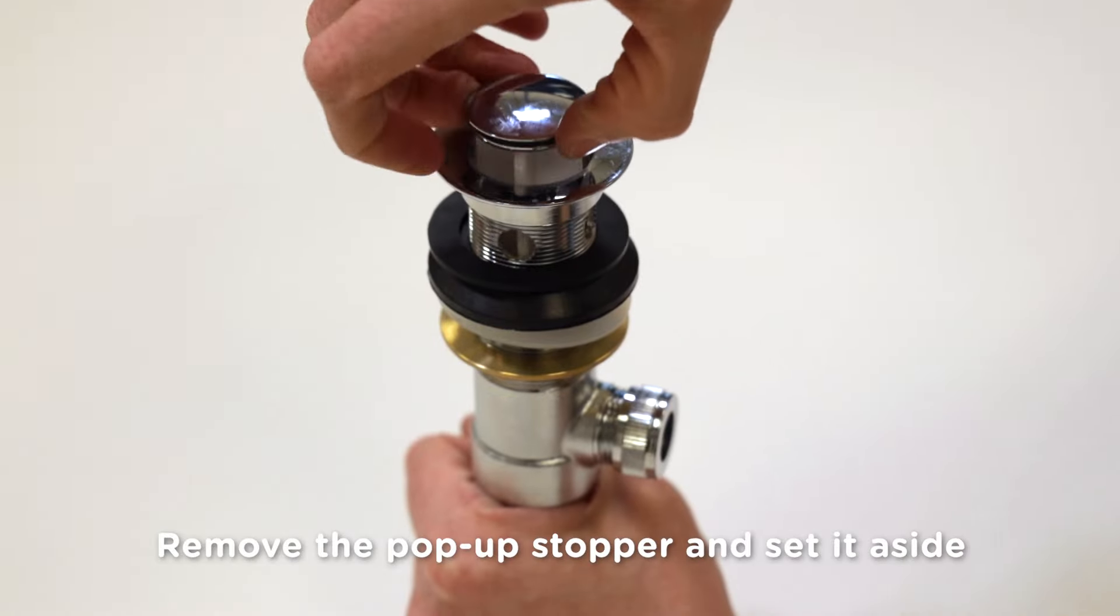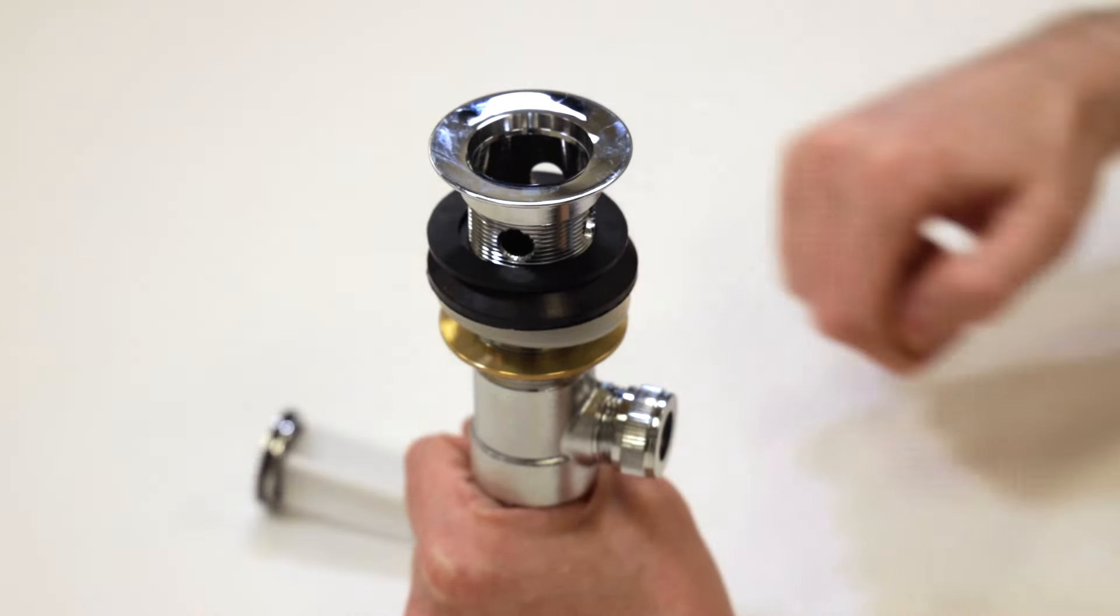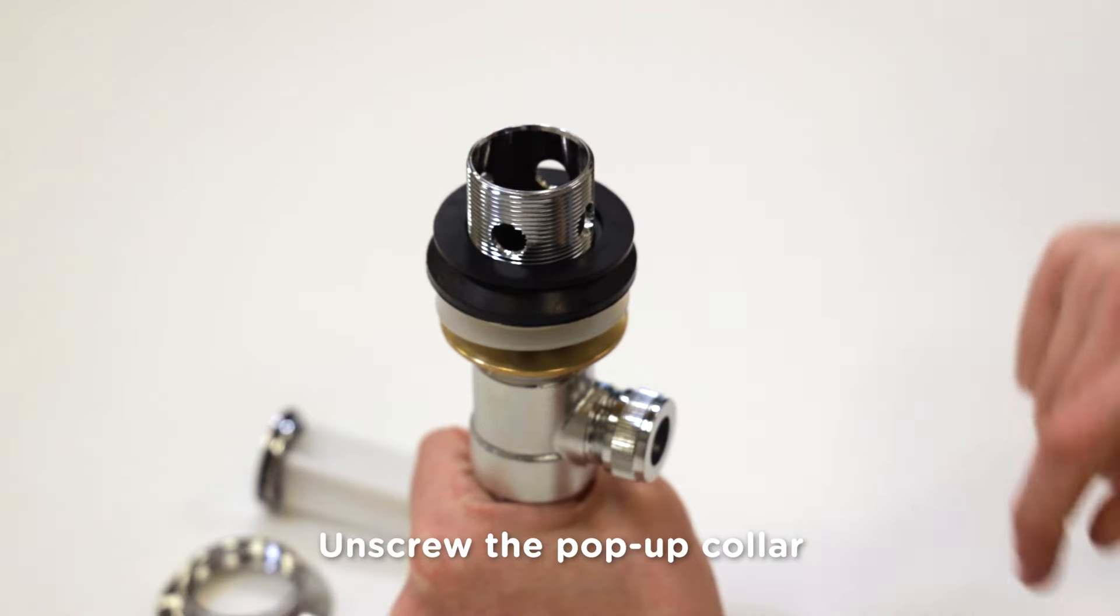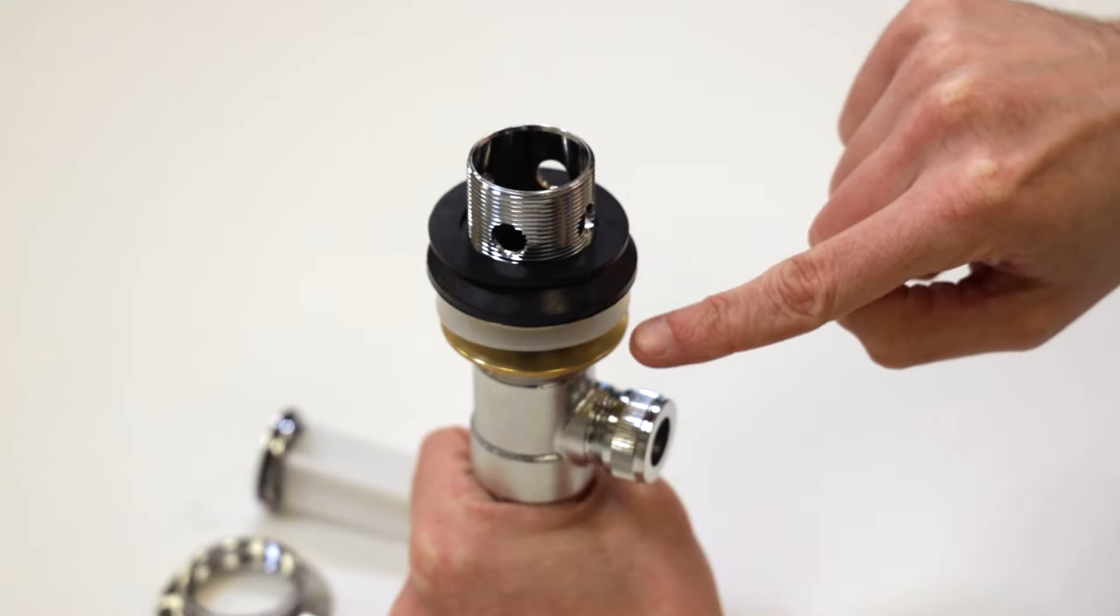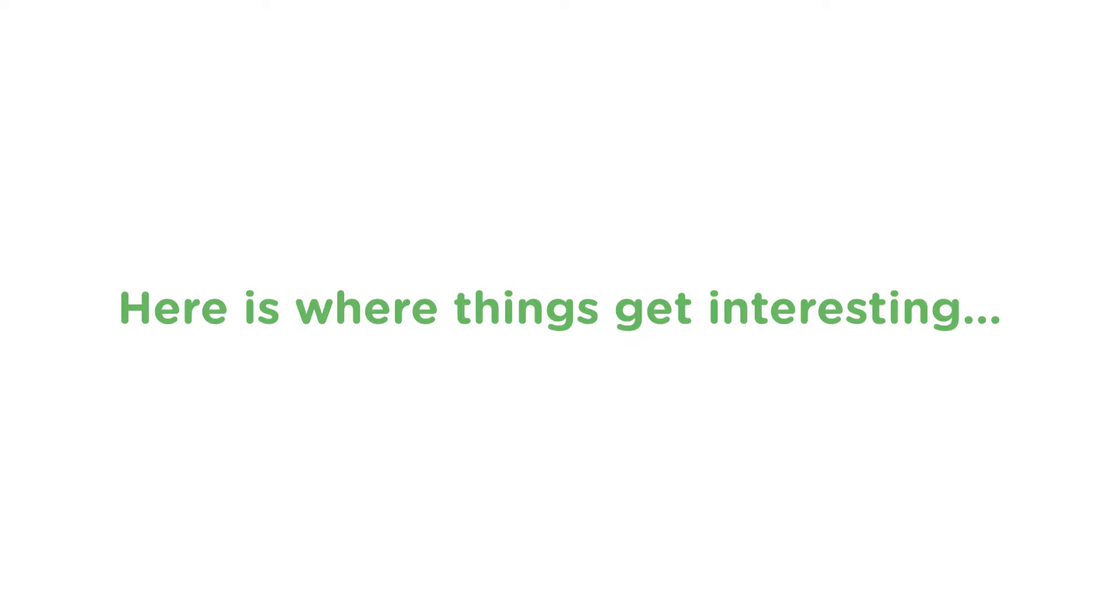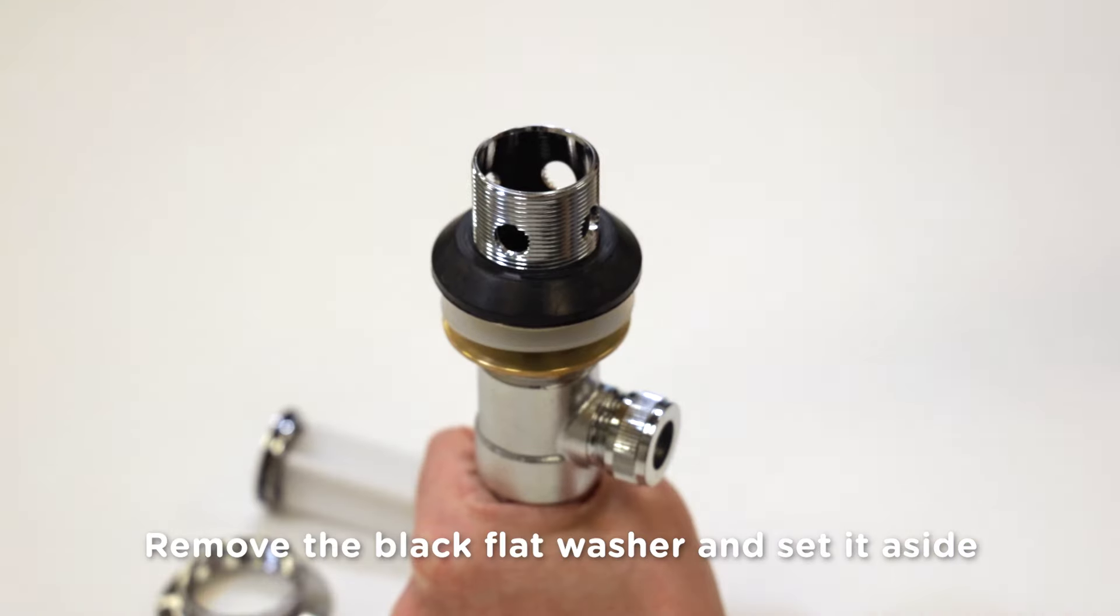Remove the pop-up stopper and set it aside. We'll use it near the very end of this installation. Unscrew the pop-up collar. Now you'll see a black flat washer, a beveled washer, a poly washer, and a brass nut. Here's where things get interesting. Remove the black flat washer and set it aside.